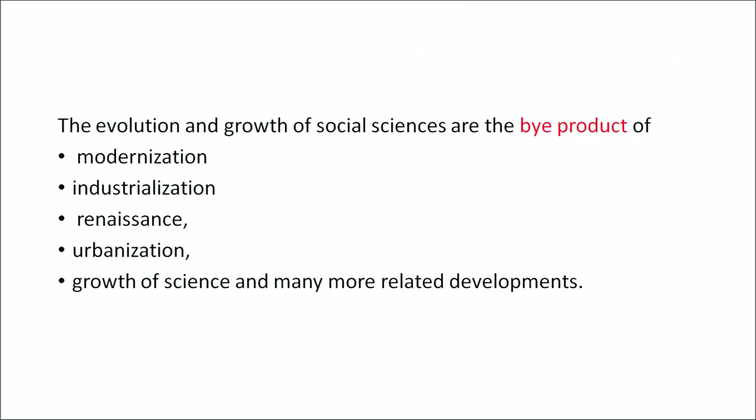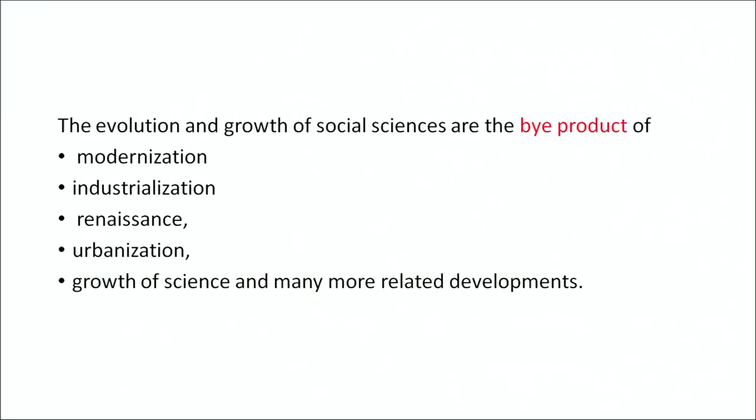Industrialization is another important factor. The origin of industrialization in Britain due to the Industrial Revolution had a great influence on our social system, human behavior, and social life, resulting in a great influence upon the formation of Social Sciences. Renaissance, which originated in Italy, also had important influence on Social Sciences. Earlier, people were living in rural villages where social relations followed a particular pattern. When industrialization and urbanization came in, the relationships between human beings changed, and our social life and living system changed.